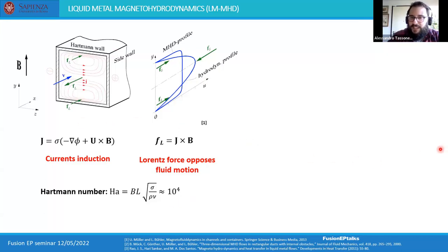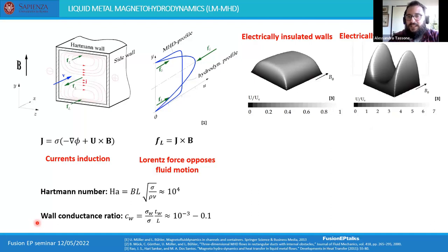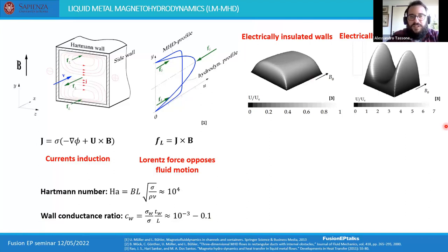Contrary to regular fluid dynamics, the kind of wall confining our fluid also matters. A snapshot of two different velocity profiles shows the result using electrically insulated walls versus electrically conducting walls — for example, one made of steel. The difference in velocity profile is significant; in one case we observe the generation of high-velocity jets. This dependence on wall electrical conductivity is characterized by the wall conductance ratio, and in a fusion reactor we deal mostly with electrically conducting walls.